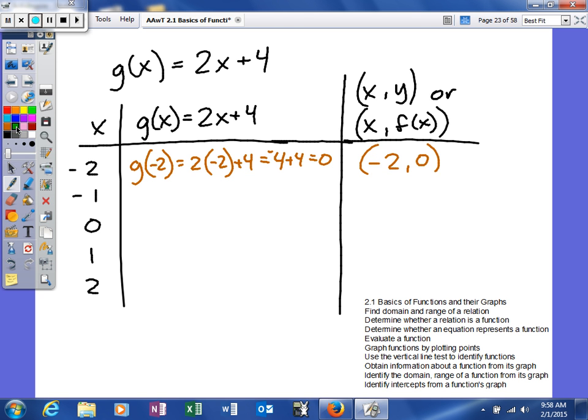For the next one, we'll say g of negative 1 is going to be 2 times negative 1 plus 4. So we get negative 2 plus 4, that's equivalent to positive 2, so that will be negative 1 comma 2.